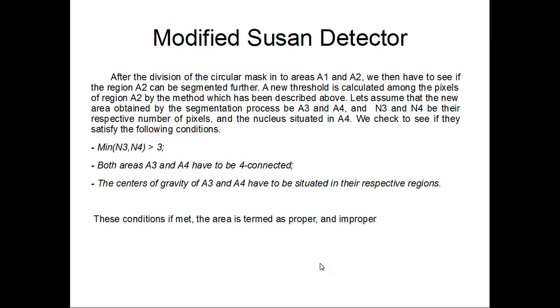We have to check to see if the number of pixels in the minimum is greater than 3, which is the same criterion as the one we have seen before. Both the areas in A3 and A4 have to be four-connected. This was not the criterion earlier. Earlier we only had the requirement for one of the areas to be four-connected. And the centers of gravity of A3 and A4 have to be situated in their respective regions. If these conditions are met, the area is termed as proper, and if not, improper.